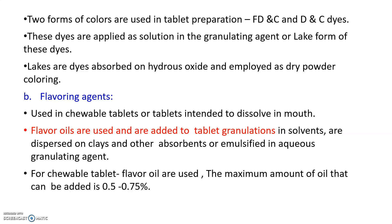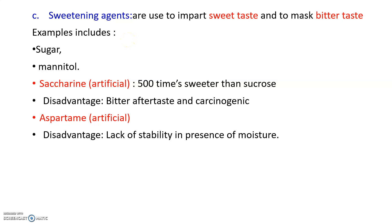Flavoring agents are used in chewable tablets or tablets intended to dissolve. Flavor oils are added to tablet granules in solvents, dispersed on clays and other absorbents, or emulsified. The maximum amount of flavoring agents used is 0.5 to 0.7 percent. Sweetening agents impart sweet taste and mask bitter taste — sugars and polyols are used. Saccharine and aspartame are used, but their disadvantages include a bitter aftertaste, carcinogenicity concerns, and lack of stability in the presence of moisture. These are the various excipients used in tablet manufacturing.